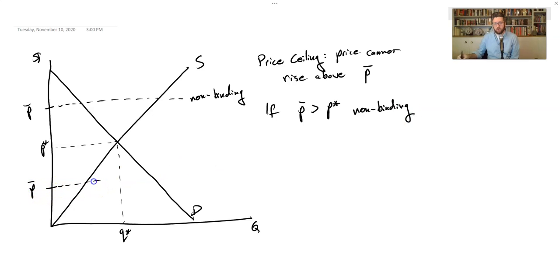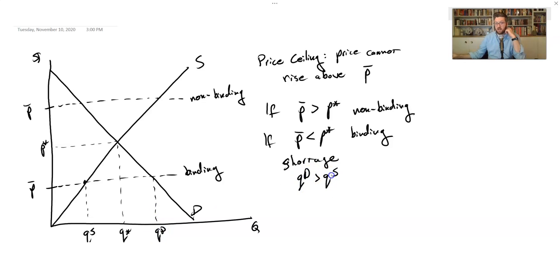However, if you choose a price ceiling below the equilibrium price, you're going to run into a shortage. Why? Because now that the price is down here, the quantity that the supply curve gives and the quantity that the demand curve gives don't match. The supply is going to be given by this, and the demand by this. The quantity demanded exceeds the quantity supplied.